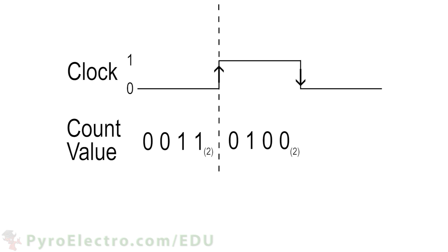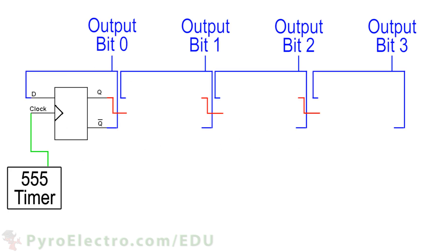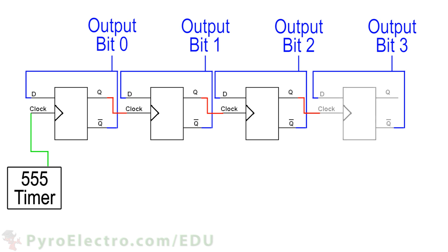So how do we build a digital counter circuit? The easiest way would be to use D flip-flops, since we're most familiar with them. The clock signal only connects to the first D flip-flop's clock pin. The Q0 pin of that first D flip-flop connects to the D input pin to give an initial value of 1 when the system starts counting. After that, the first D flip-flop's Q output connects to the clock input of the following D flip-flop, and this type of connection follows through to all other D flip-flops in the ripple counter.